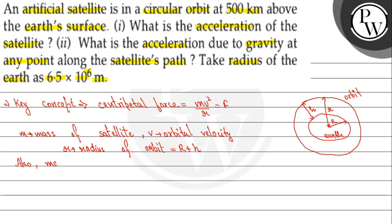Also, we know that mass times acceleration equals force. Here A represents acceleration. So we can write mv²/r = mA. Mass cancels on both sides, so the value of A will be v²/r.